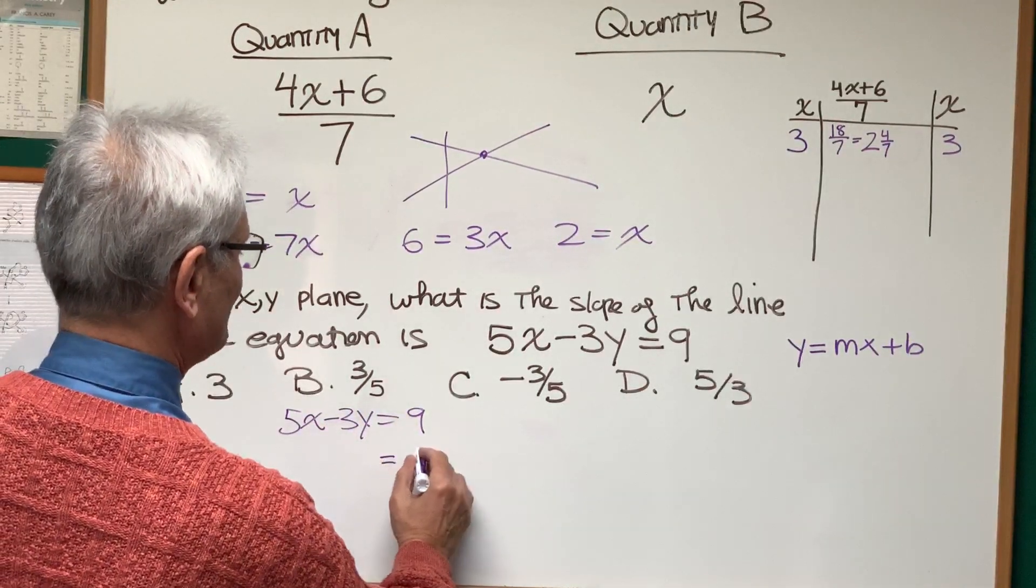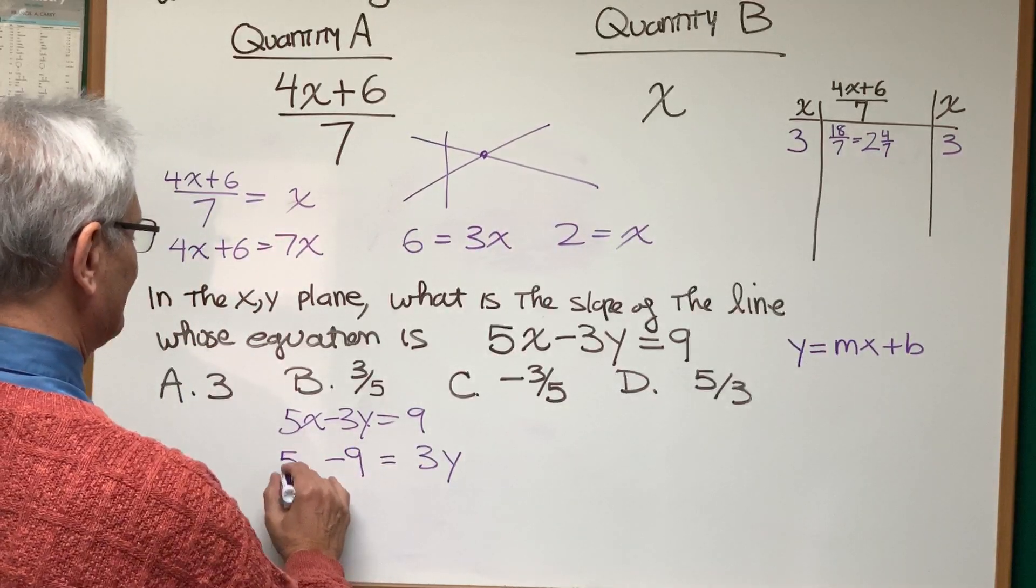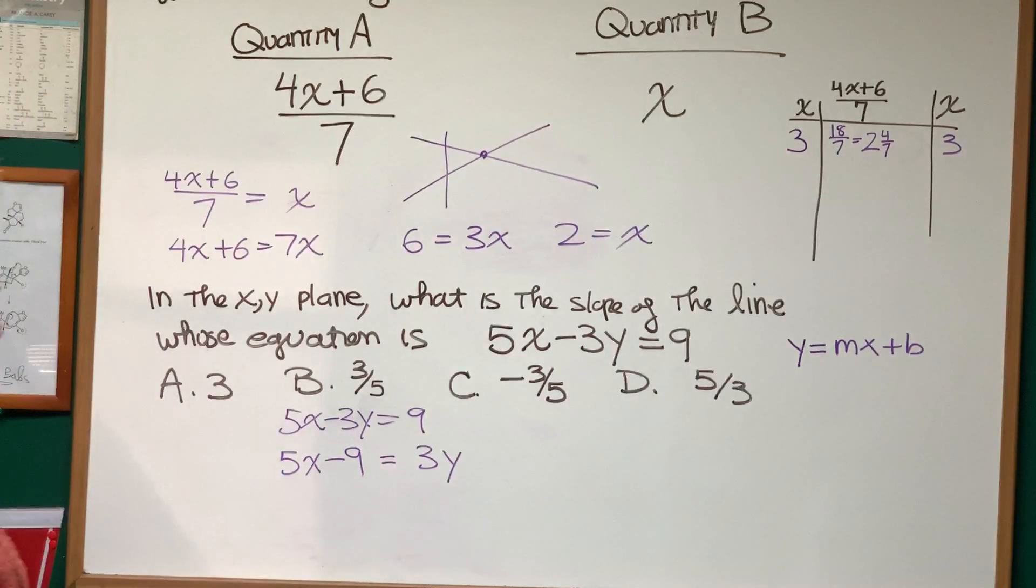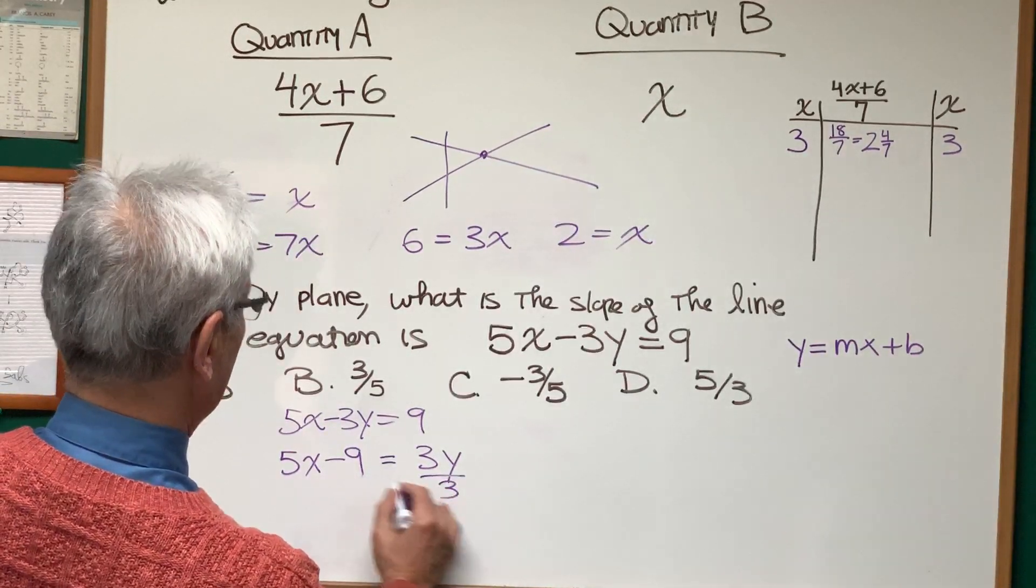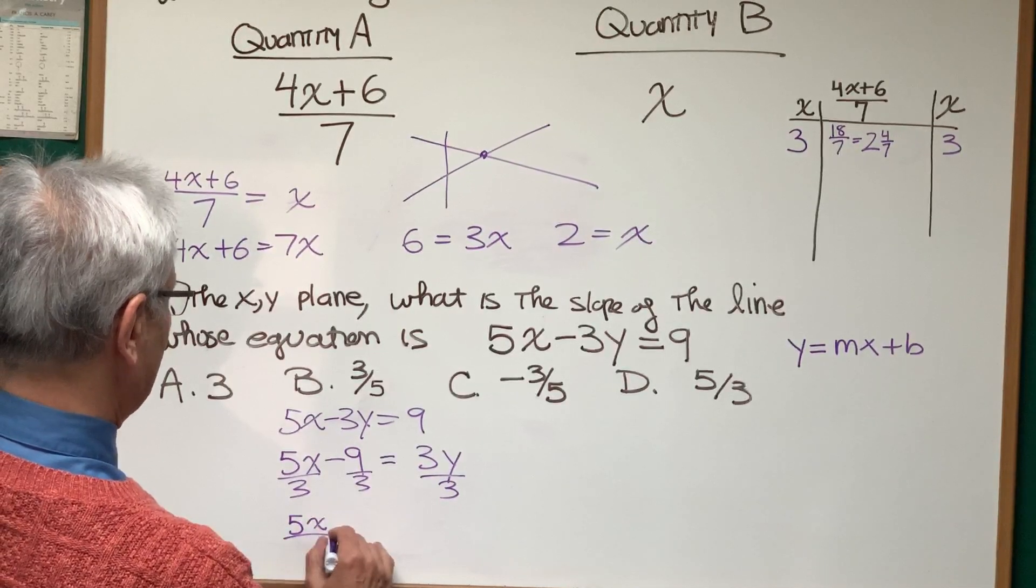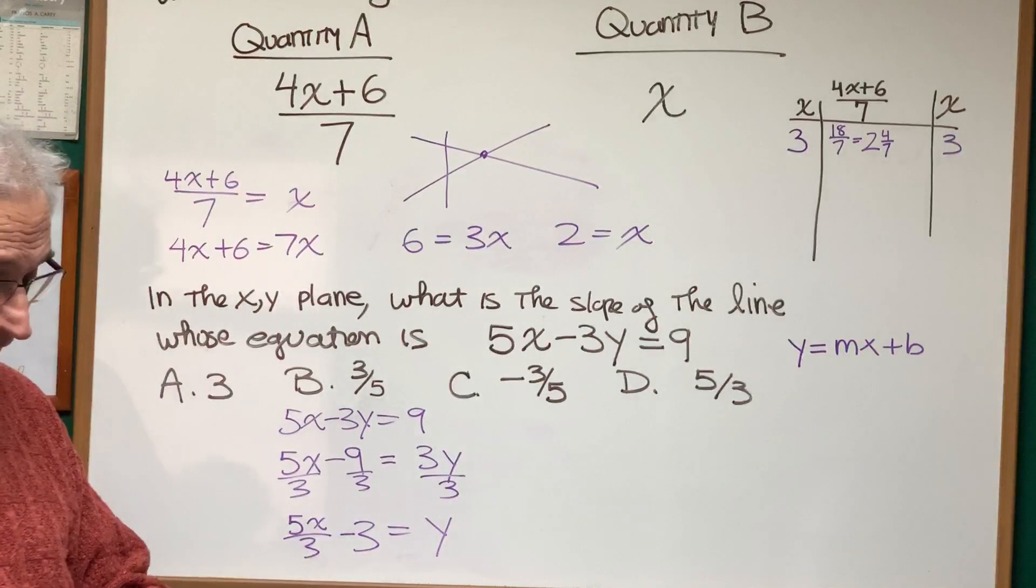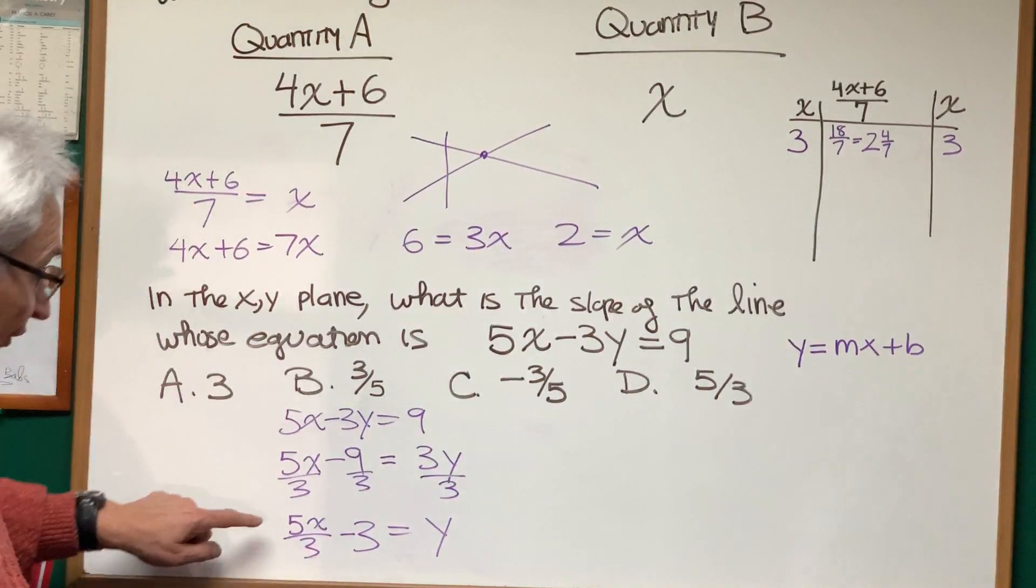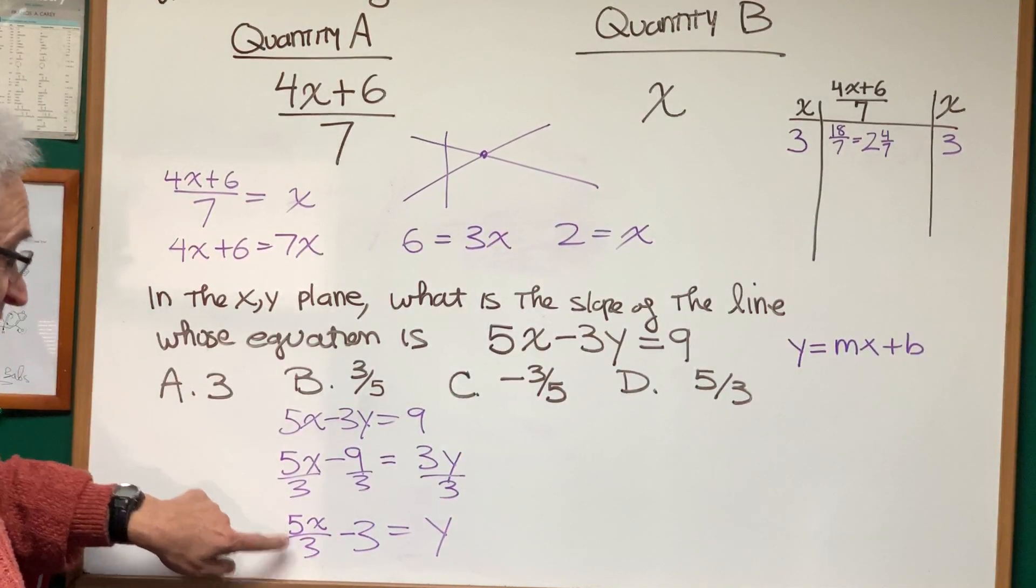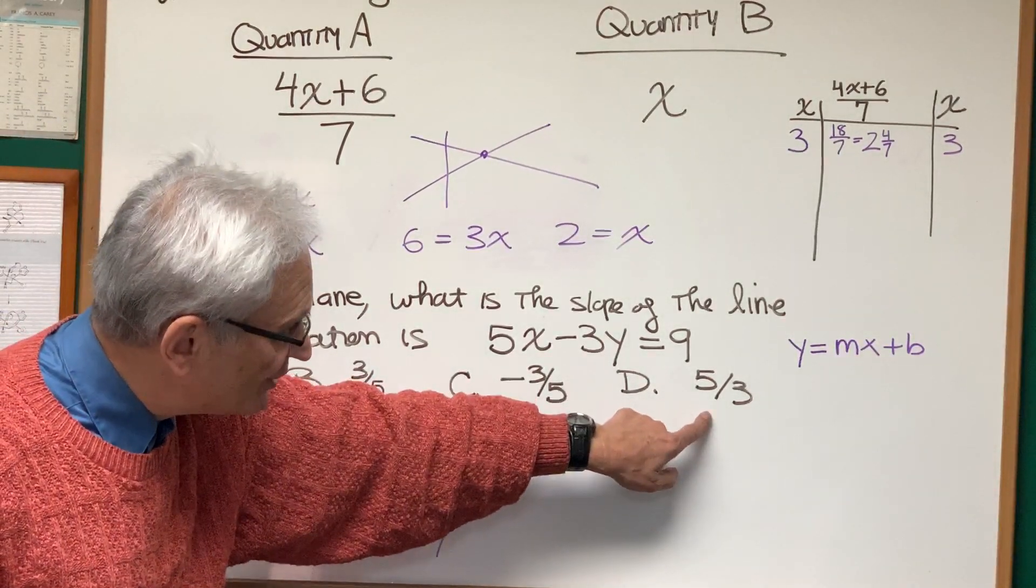Let's add 3y to both sides and subtract 9 from both sides, and we're going to get this. We're going to divide all three terms by 3, and we'll get 5x divided by 3 minus 3 equals y. And once we have it in this form, we know that the slope is equal to 5 over 3, 5 thirds.